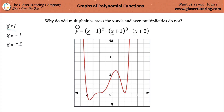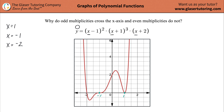x equals one — oh look, here it is on the graph. x equals negative one — oh look, here's negative one. x equals negative two — oh look, here's negative two. So now that's all confirmed.